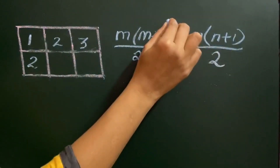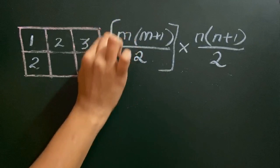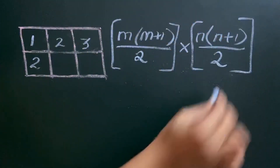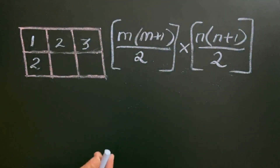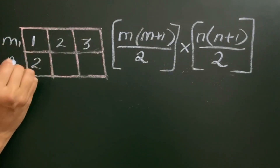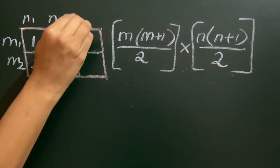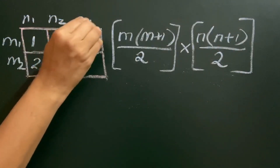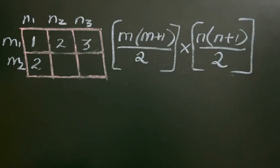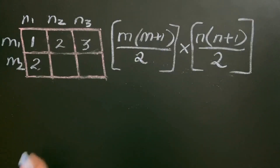This is the formula to find the number of parallelograms in an m by n grid. Here m is the number of rows and n is the number of columns. After finding m and n, let's substitute into the formula and find the number of parallelograms.